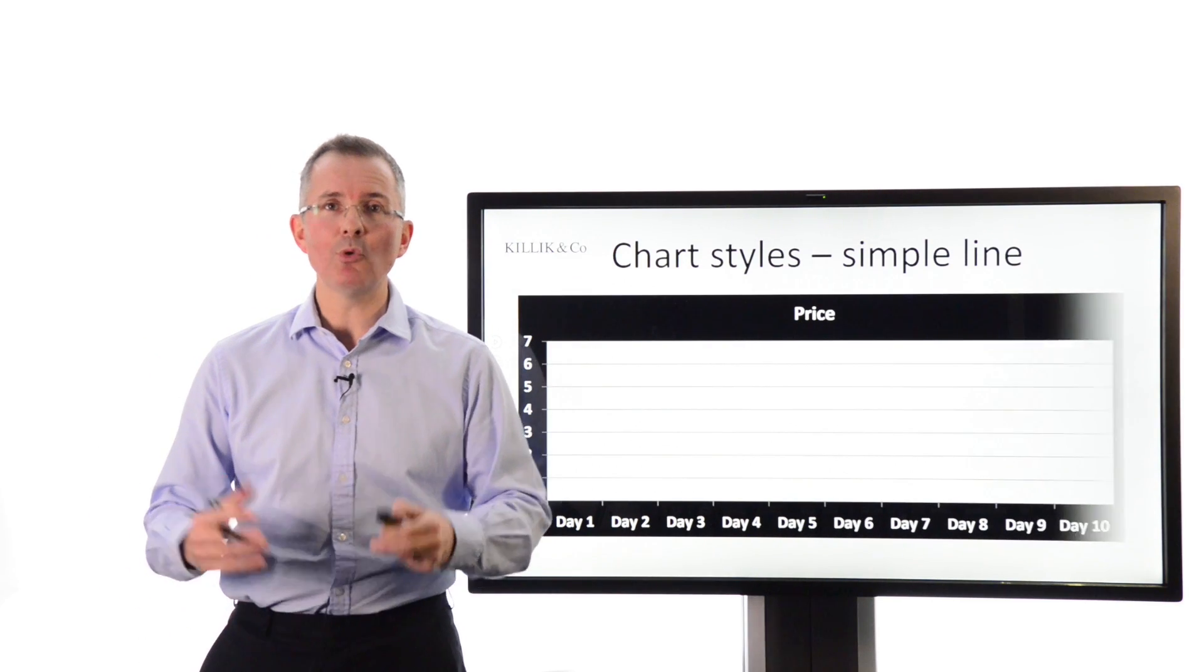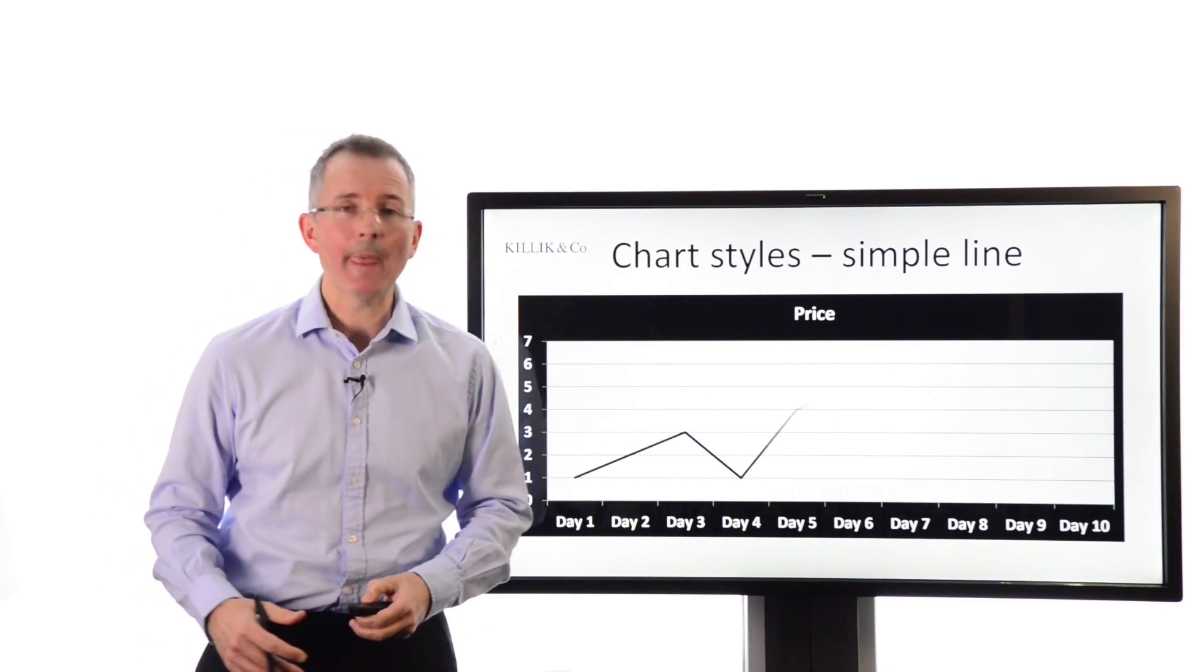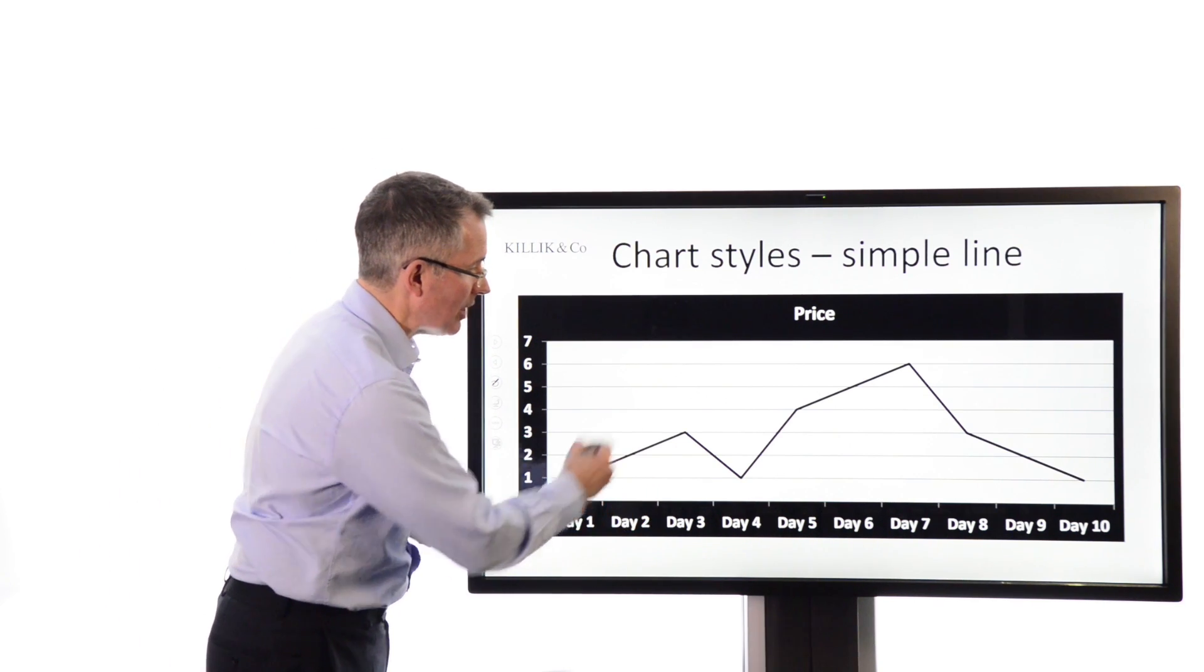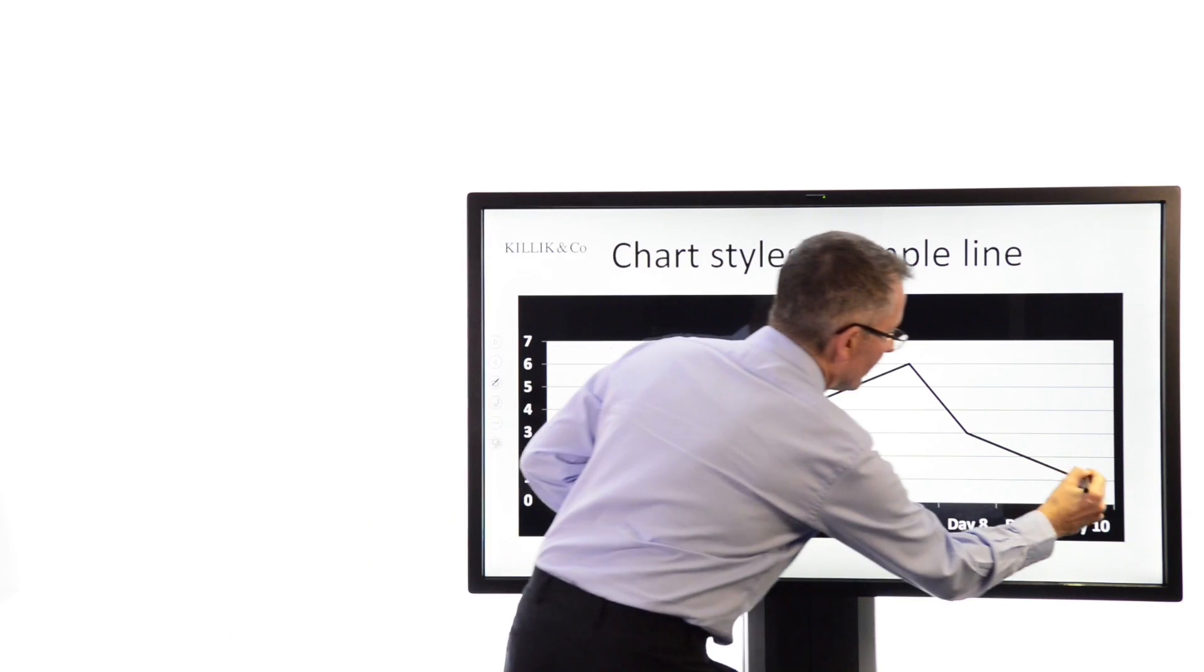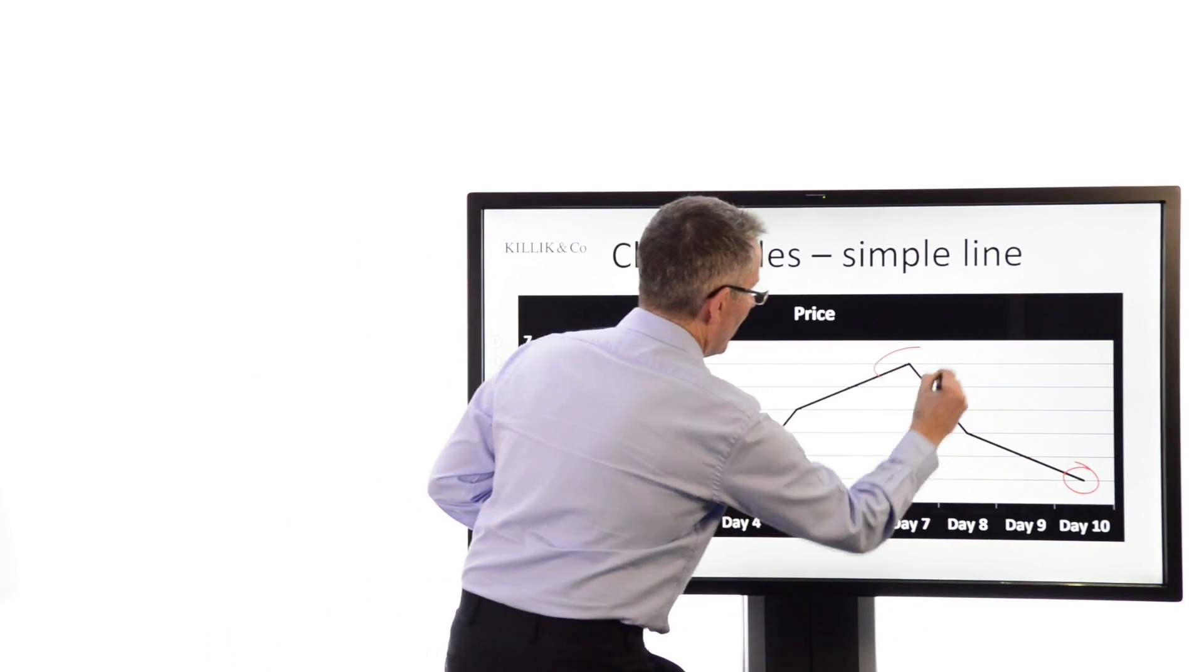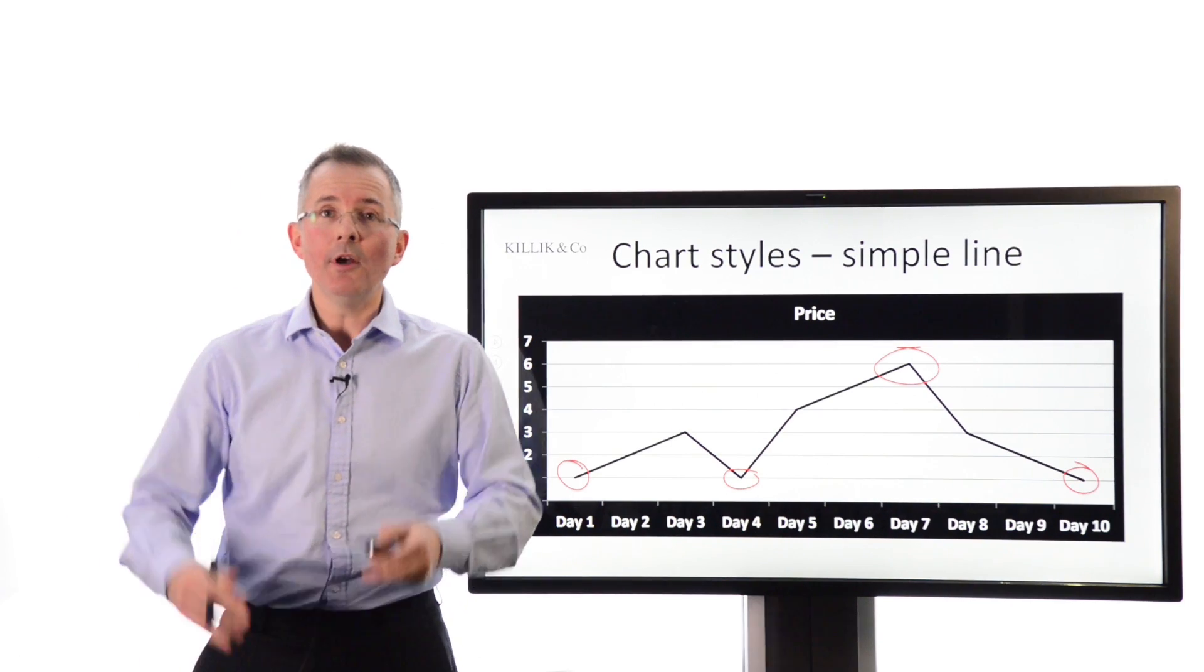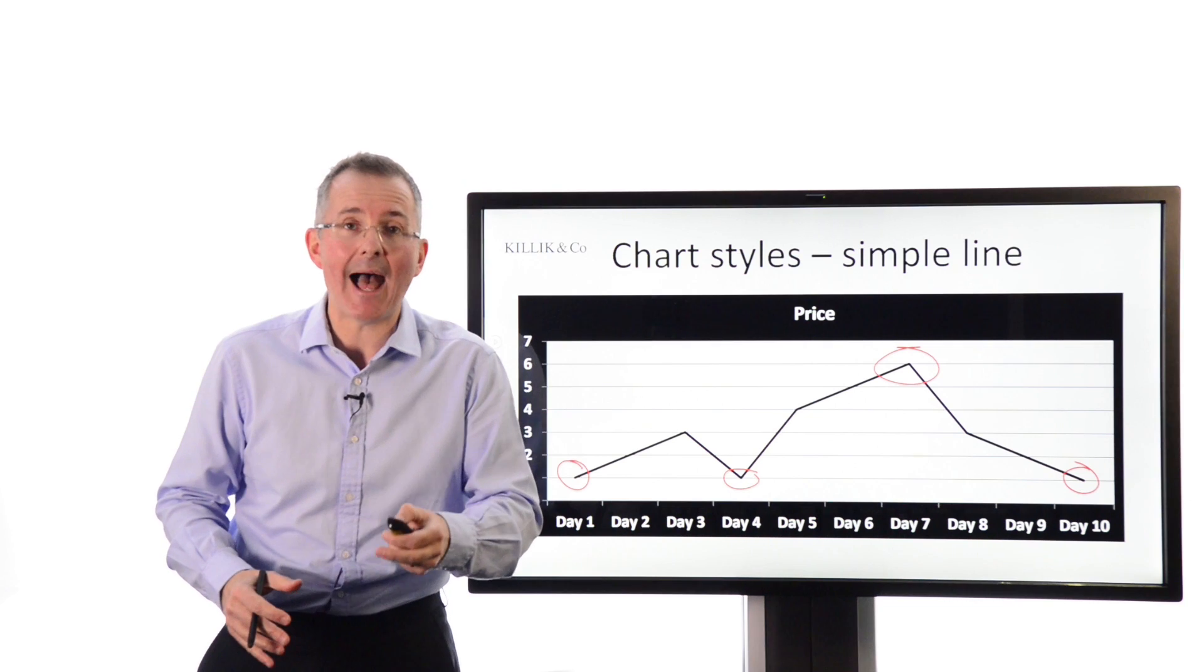So with no more ado, one option is a simple chart line. You literally plot a share price over time, and that tells you a certain amount of information. It tells you that the share price is quite volatile. It gives you some idea about where it started, some idea about where it finished, the peak, the subsequent trough, and so on. But for a chartist, they would say there's only so much information I can get from that.